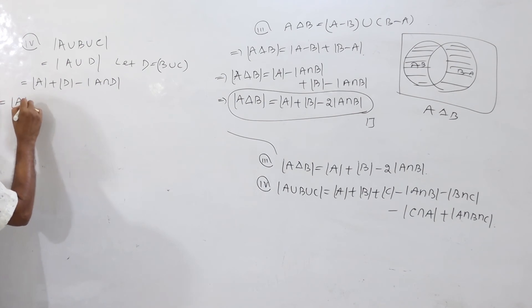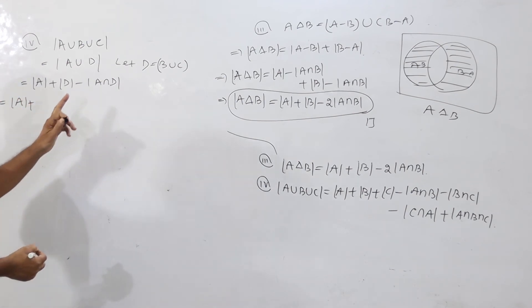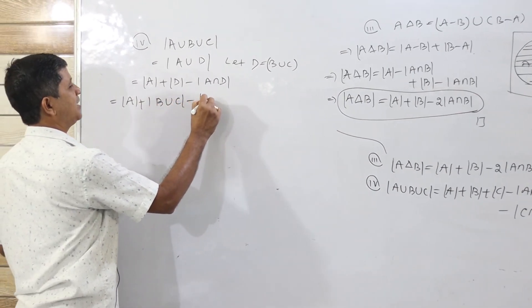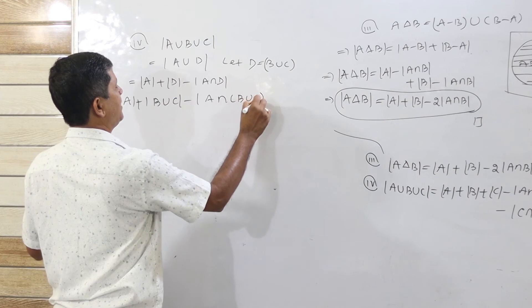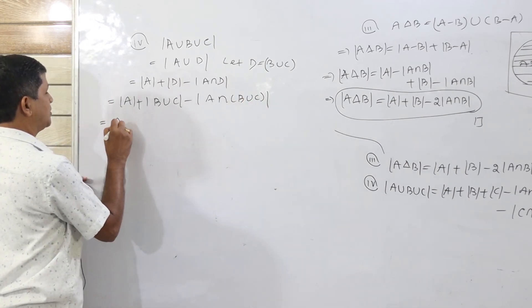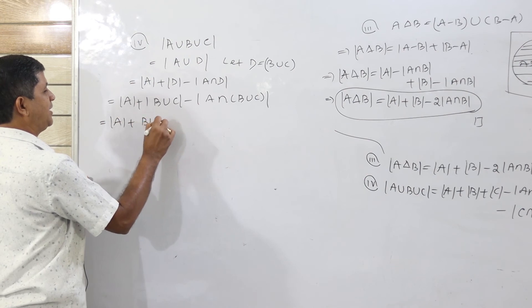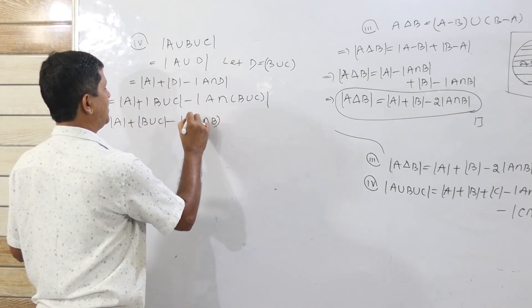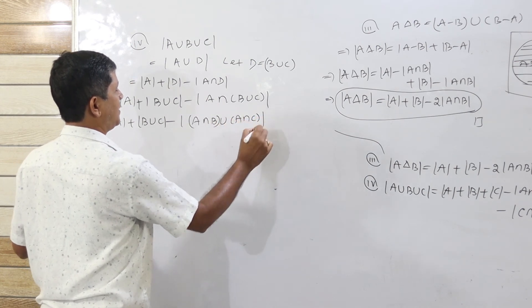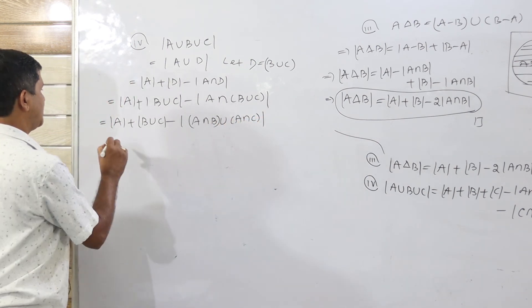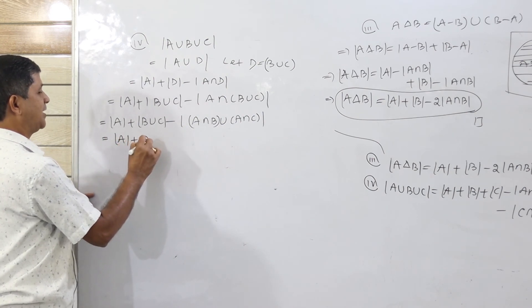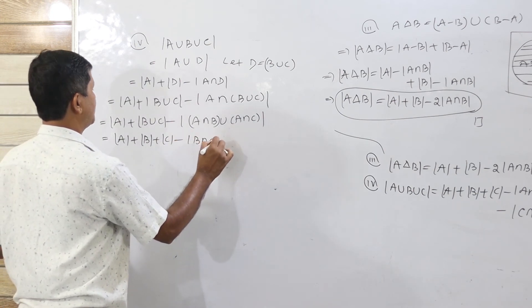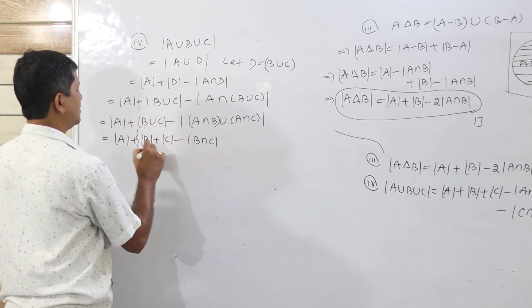Substituting D equals B union C: cardinality of A plus cardinality of B union C minus cardinality of A intersection (B union C). Applying the first result to B union C gives cardinality of B plus cardinality of C minus cardinality of B intersection C.